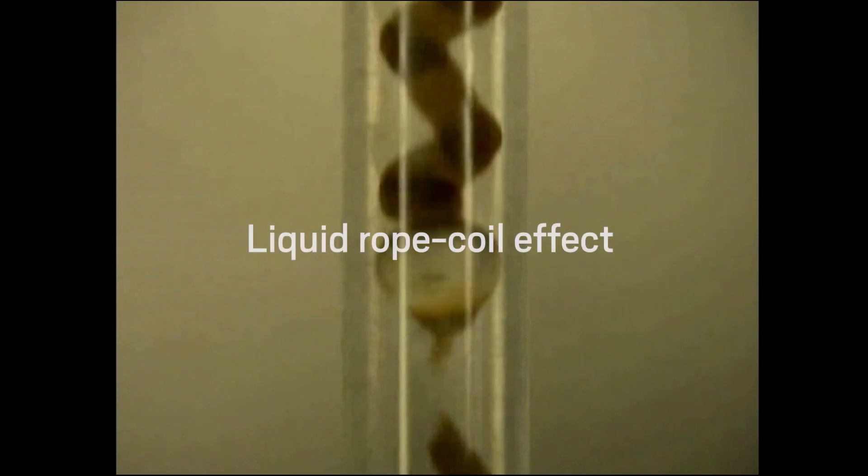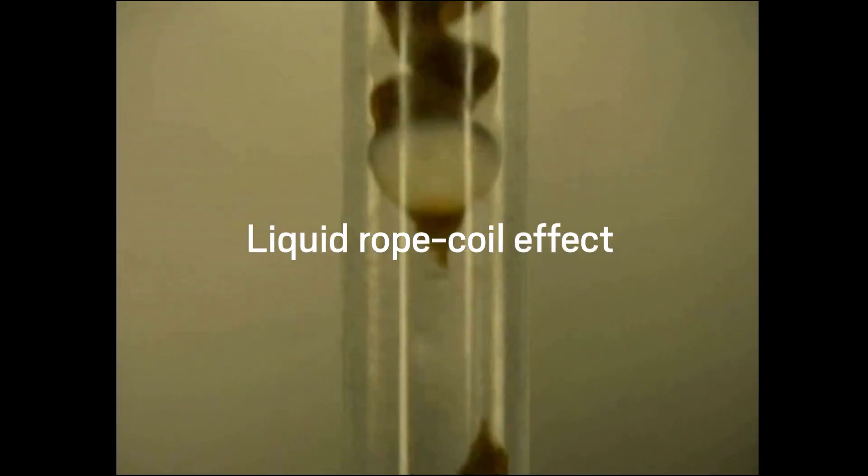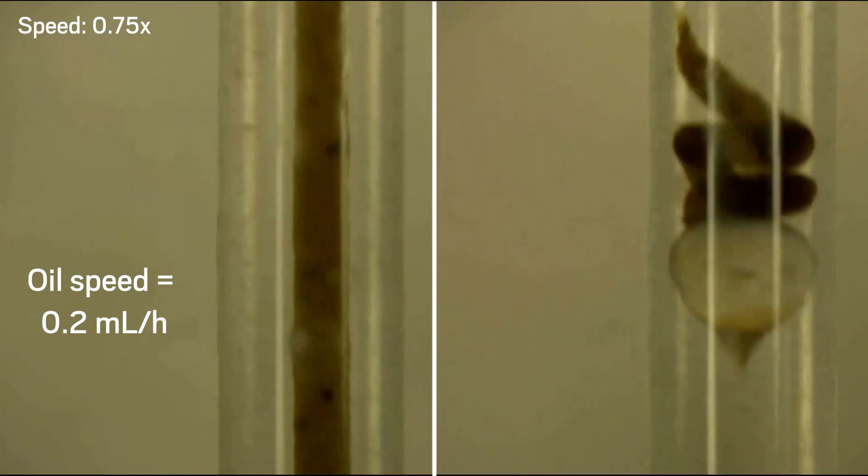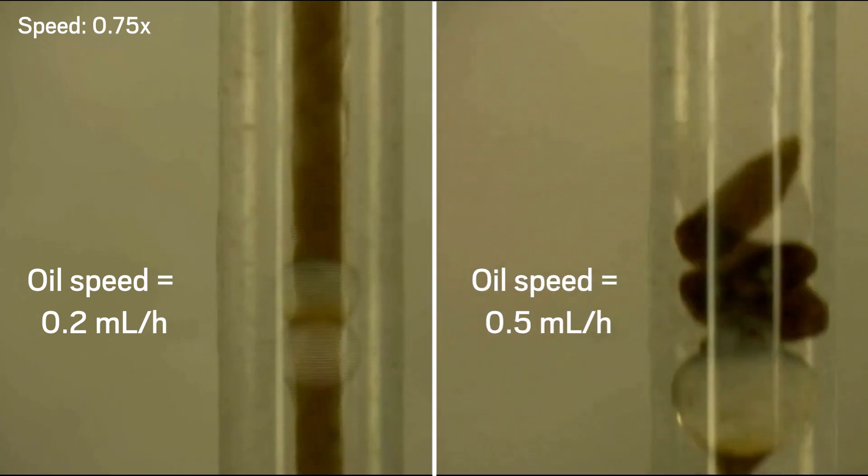The helical motors get their signature shape through the liquid rope coil effect. This effect depends on precisely controlling the flow speed of each fluid. For instance, if the oil is injected slowly, the material comes out fairly straight, but as you increase the oil speed, you'll see the material start to form coils.